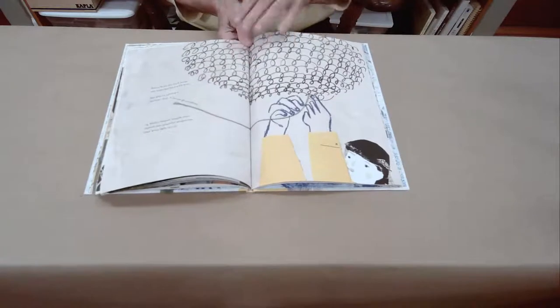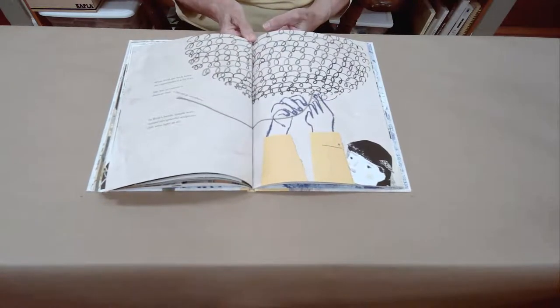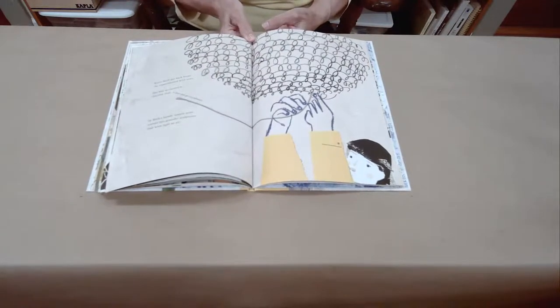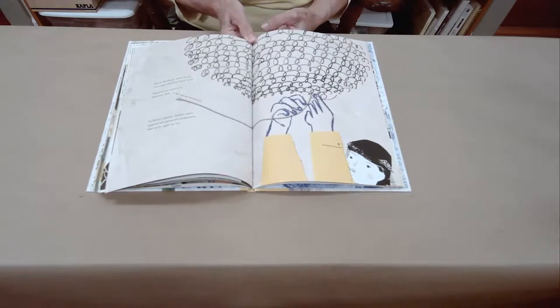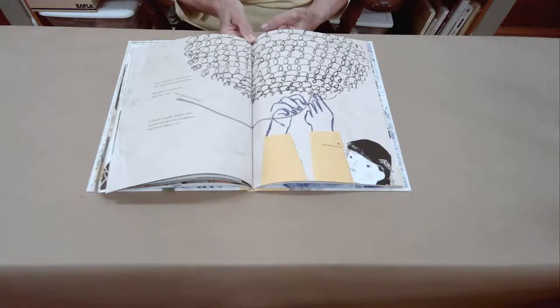When Ruth got back home, she experimented with wire. She was so excited to discover that a line can go anywhere. In Ruth's hands, simple wire turned into graceful sculptures that were light as air.